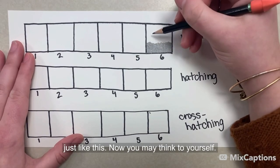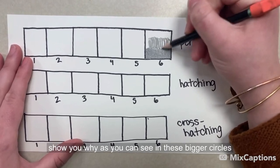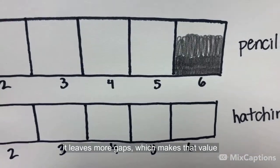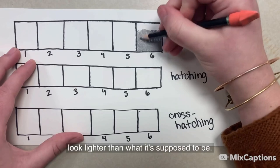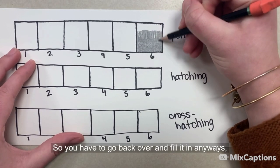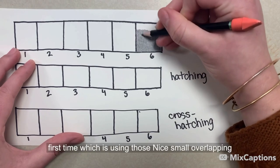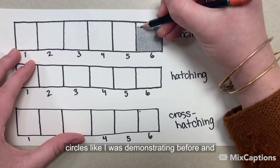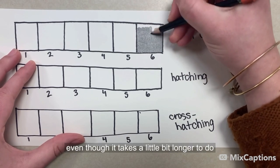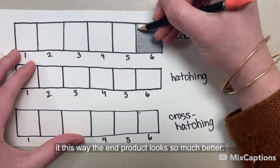Now you may think to yourself, why not just use bigger circles? And I'll show you why. As you can see in these bigger circles, it leaves more gaps, which makes that value look lighter than what it's supposed to be. So you have to go back over and fill it in anyways. So it's better just to do the right thing the first time, which is using those nice small overlapping circles like I was demonstrating before. And even though it takes a little bit longer to do it this way, the end product looks so much better.